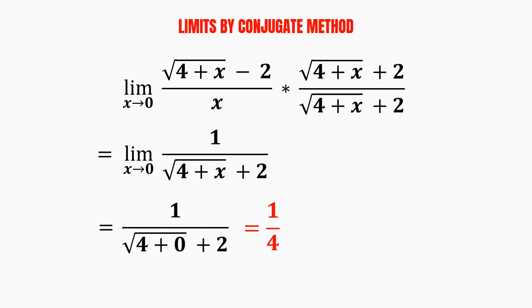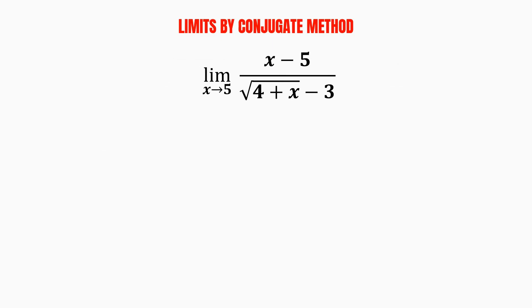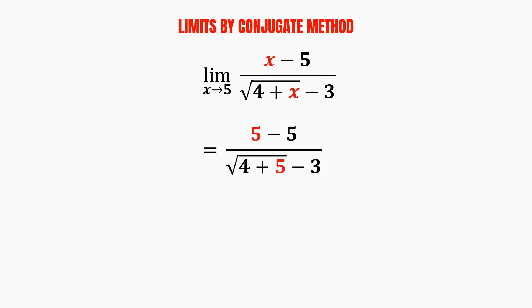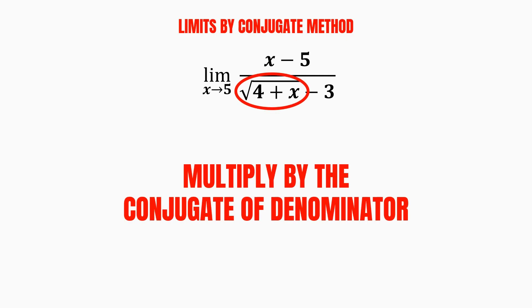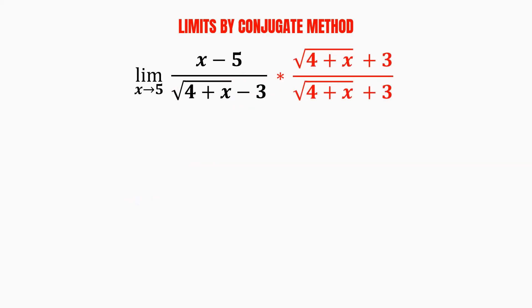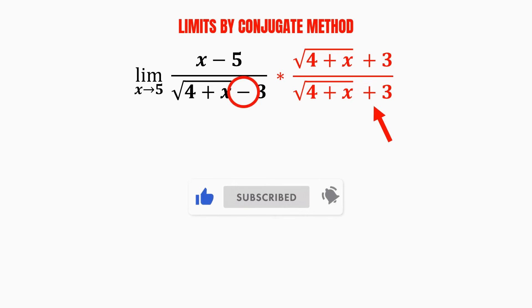Now let's try another example. If we use direct substitution here by plugging the value 5 into the variable x, we will end up getting 0 divided by 0. Therefore, we will first need to apply the conjugate method as well, since we have a square root in the denominator. So in this case, we multiply it by the conjugate of the denominator, which is the square root of 4 plus x plus 3, as we initially had a negative sign.